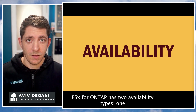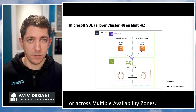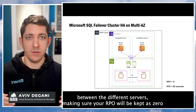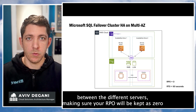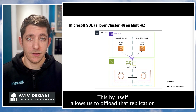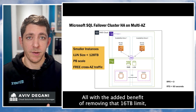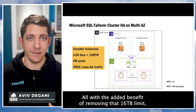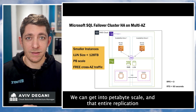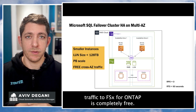Let's start with availability. FSx for ONTAP has two availability types: one deployed in a single availability zone, or across multiple availability zones. In both architectures, the quorum logs and data will be synchronously replicated between two different servers, making sure your RPO is kept at zero with a seamless failover and an RTO of just a few seconds. This allows us to offload replication from SQL to the storage layer and save compute cost. It also removes the 16 terabyte limit, increasing it to 128 terabyte per block device, and any intra-region traffic to FSx for ONTAP is completely free.